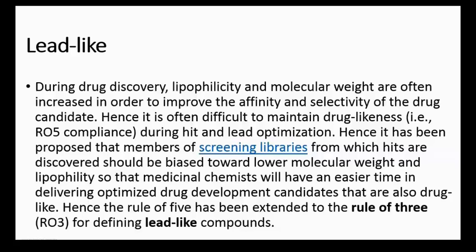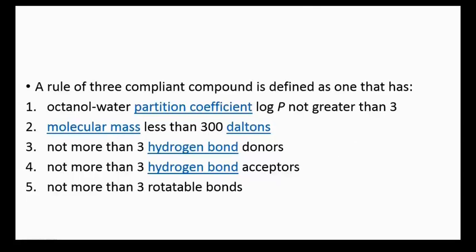Hence the Rule of Five has been extended to the Rule of Three (RO3) for defining lead-like compounds. A Rule of Three compliant compound is defined as one that has an octanol-water partition coefficient log P not greater than three, molecular mass less than 300 daltons, not more than three hydrogen bond donors, not more than three hydrogen bond acceptors, and not more than three rotatable bonds.